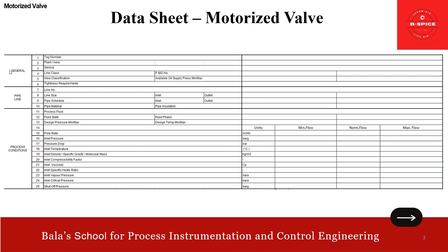As usual, the general information includes tag number, plant area, service, line class, area classification, leakage requirements, P&ID number, and available supply pressure. Then we talk about pipeline: the line number, line size, inlet and outlet, pipe schedule inlet and outlet, piping material, and pipe insulation if any.